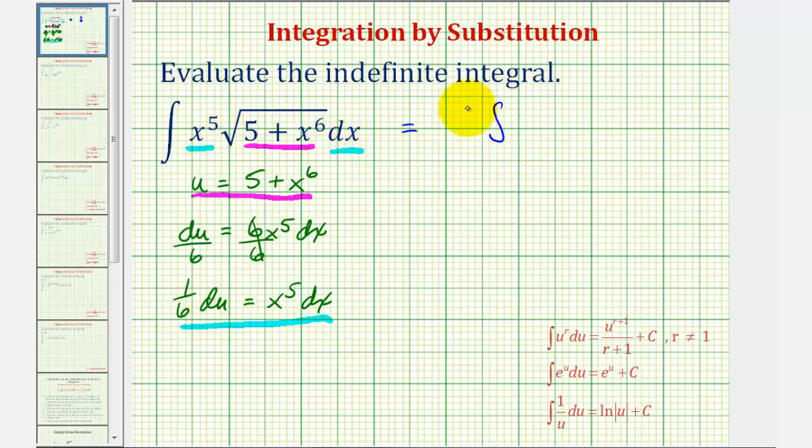We have one-sixth du, and then since five plus x to the sixth is equal to u, this is the square root of u or u to the one-half as a rational exponent.